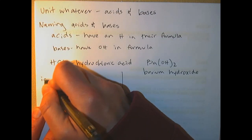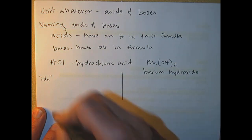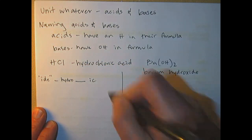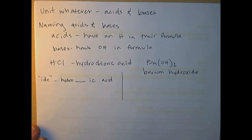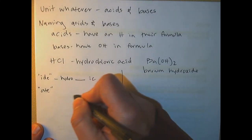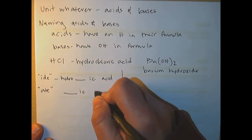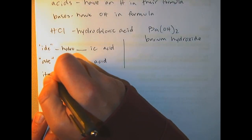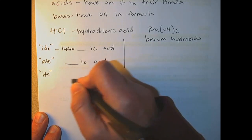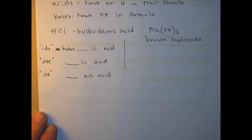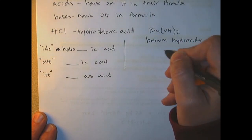For acids: if the old name ends in IDE, that gets the 'hydro' prefix and the 'ic' suffix — like the one above, hydrochloric acid. If the old name ends in ATE, then it becomes just blank-ic acid, no hydro. And if it ends in ITE, then you call it blank-ous acid. For bases, it was really straightforward — we just name them regular, so it's going to be 'something hydroxide.'